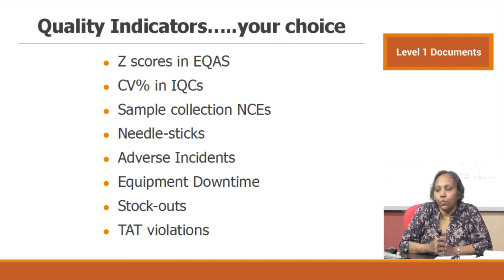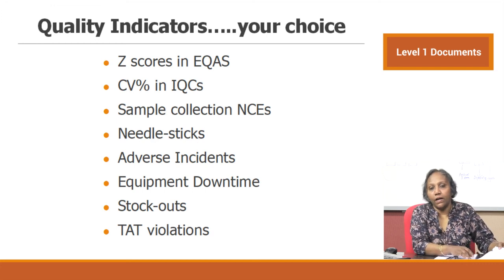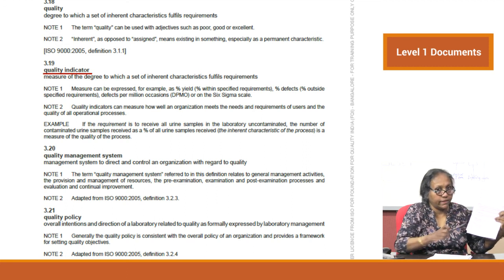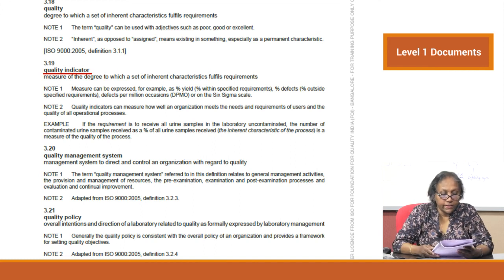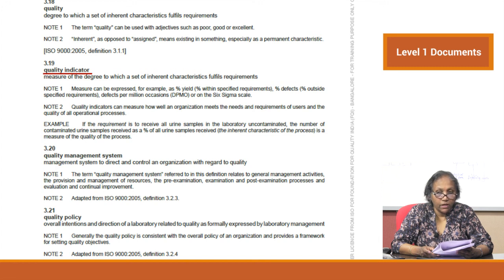NABL recommends that at least one indicator be set in pre-analytical, analytical, and post-analytical areas — but the more indicators you have, the easier monitoring becomes. Clause 3.19 of the standard defines quality indicator as a measure of the degree to which a set of inherent characteristics fulfill requirements. It can be expressed as percentage yield, percentage defects, percentage outside specified requirements, defects per million occasions (DPMO), or on the six sigma scale.